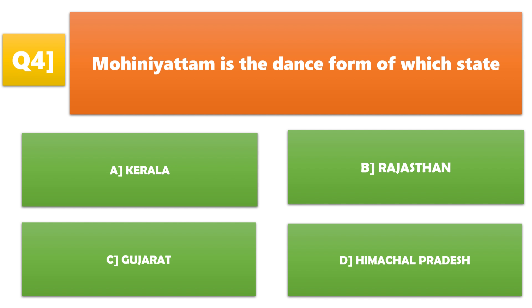Mohini Attam is the dance form of which state? A. Kerala, B. Rajasthan, C. Gujarat, D. Himachal Pradesh. A. Kerala is the correct answer.